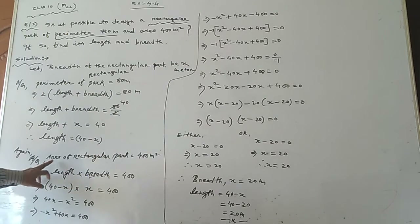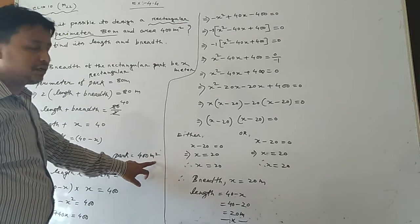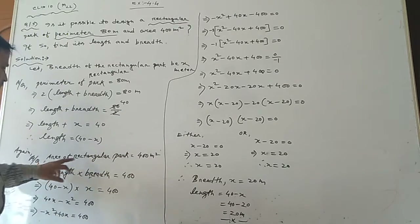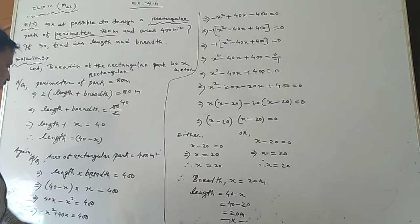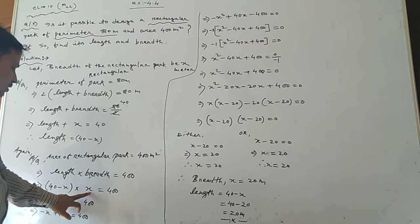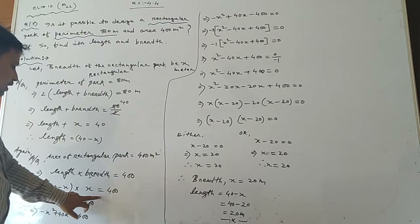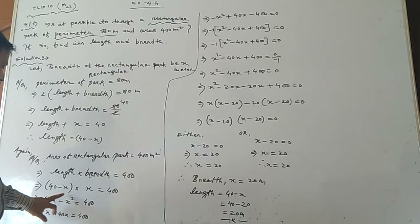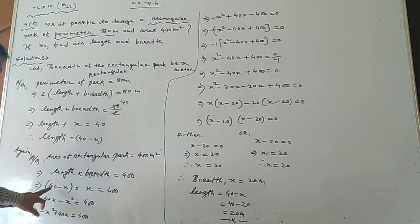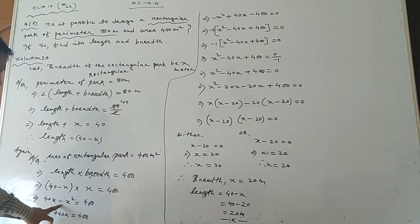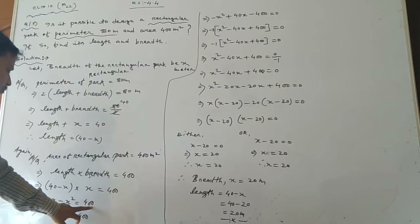Breadth is x and length is 40 minus x. According to the equation, area of the rectangular part equals 400 meter square. Area of a rectangle formula is length into breadth equals 400, so (40 minus x) into x equals 400.